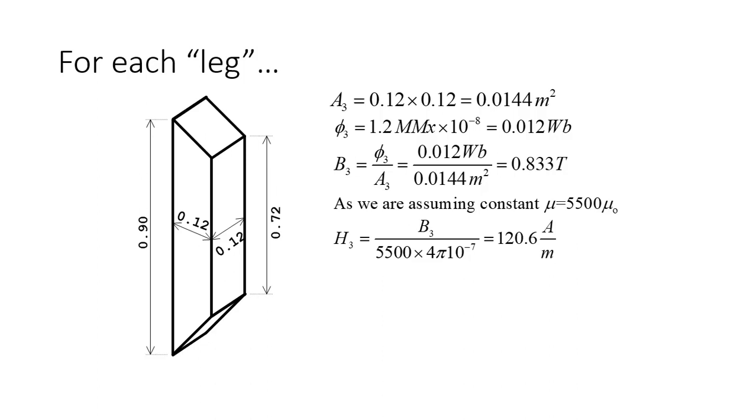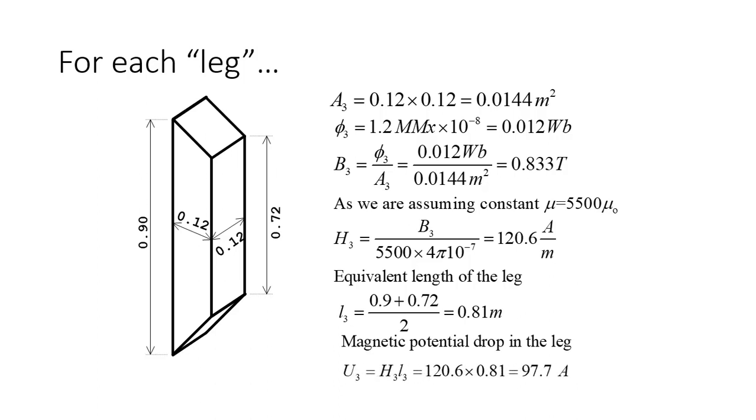Multiply H₁ by the length of that segment, and that will be the magnetic potential drop in it. Right? But what is the length? 0.9 or 0.72? The average. That is the equivalent length of that leg. The average of those lengths: 0.81. Multiply H₁ by L₁, and that is the magnetic potential drop in that segment.